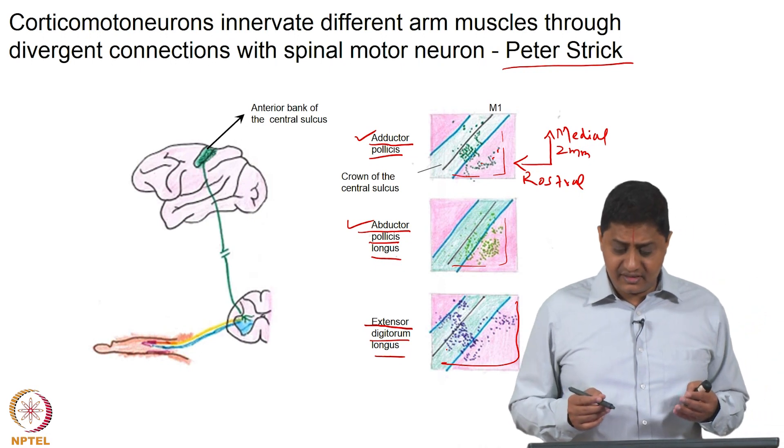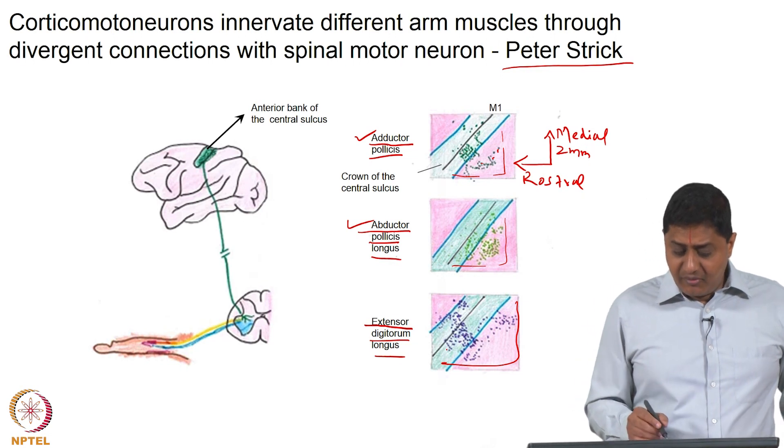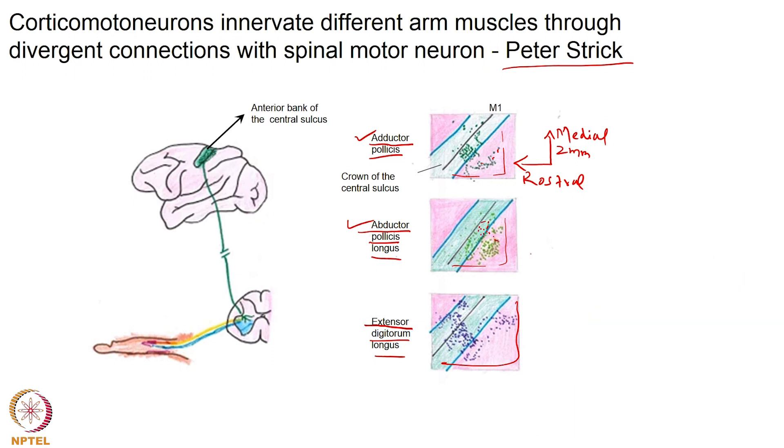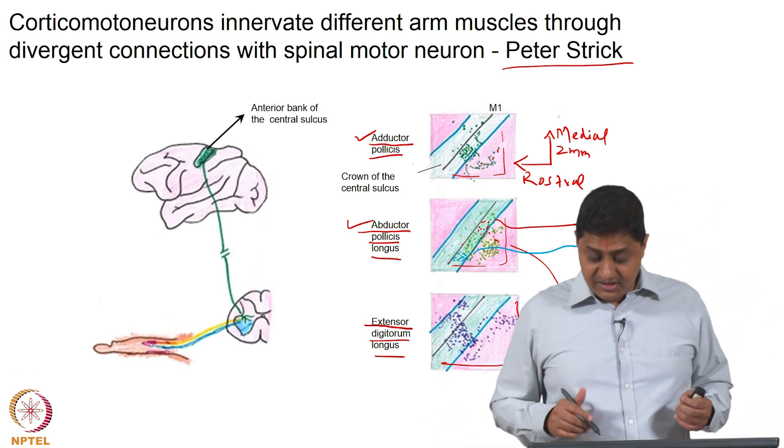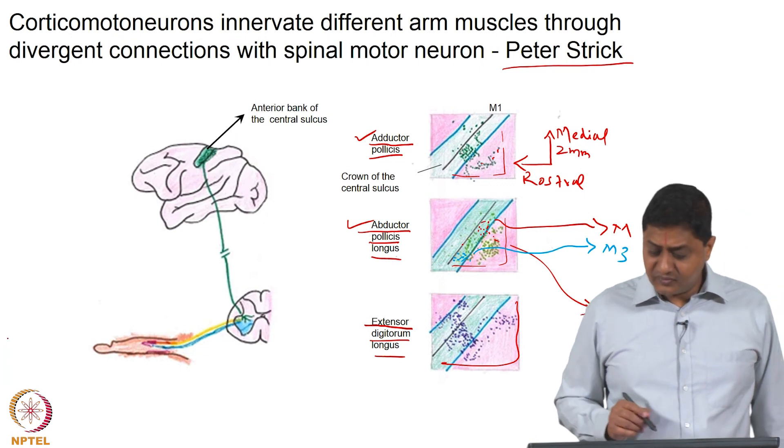What this means is that there is both divergence and convergence. From a particular neuron or from a particular area there may be projections to multiple muscles. Let us call this muscle 2, muscle 3, and so on. There is an amount of divergence and there is also convergence in terms of the muscle.